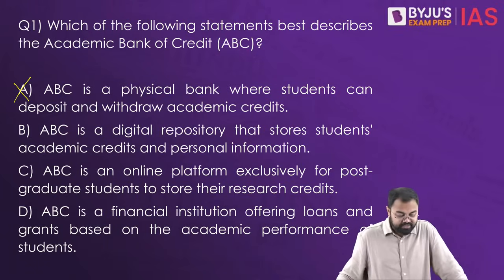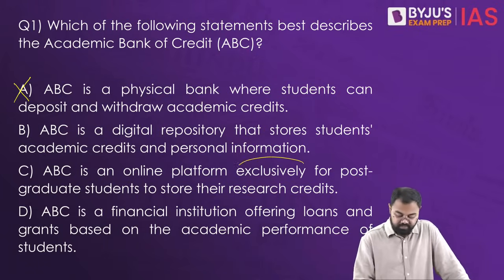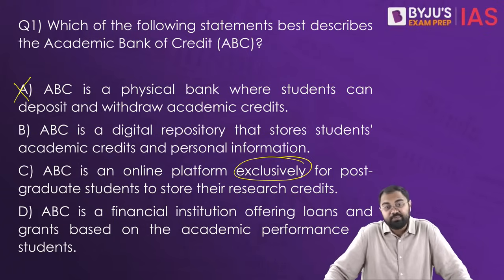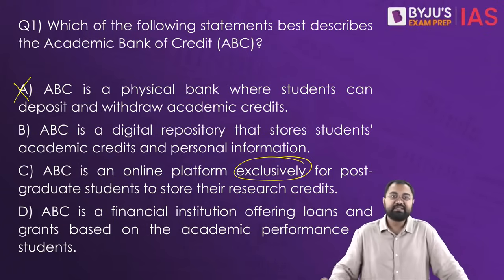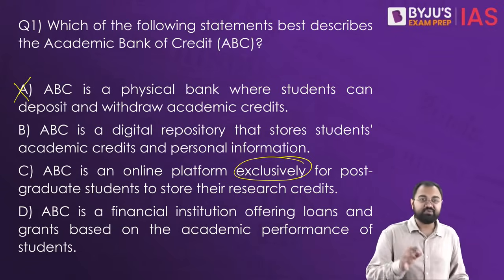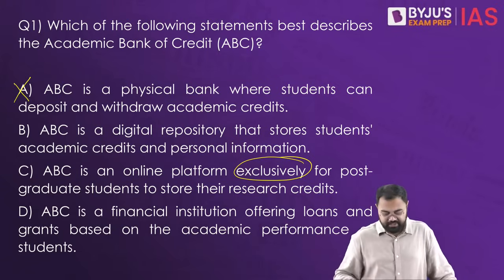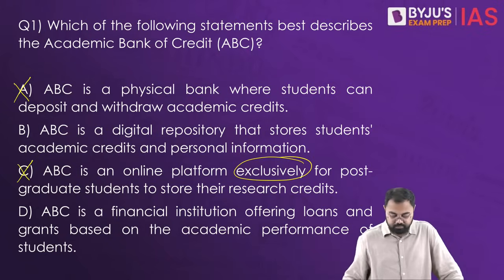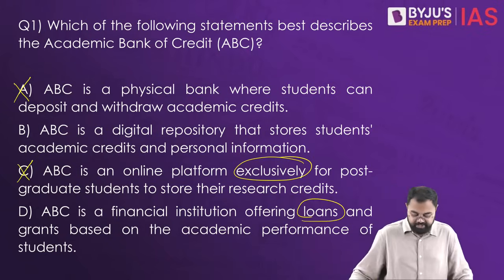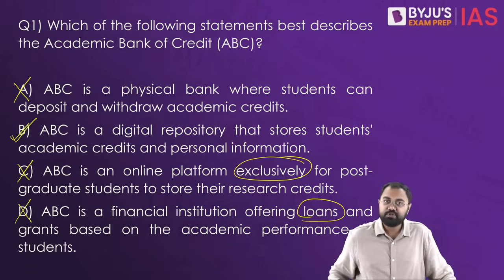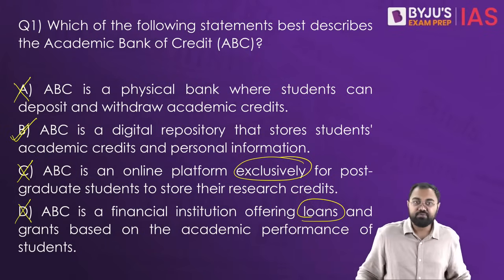Option C says it is an online platform exclusively for postgraduate students to store their research credits. We did not discuss anything suggesting it's only for undergraduates or postgraduates — it is for the academic career of any student. Also, the word 'exclusively' in most cases indicates a wrong statement. Option D says it is a financial institution offering loans and grants based on academic performance — nothing to do with that. So the correct answer here is B.